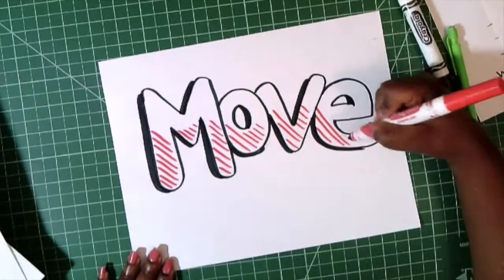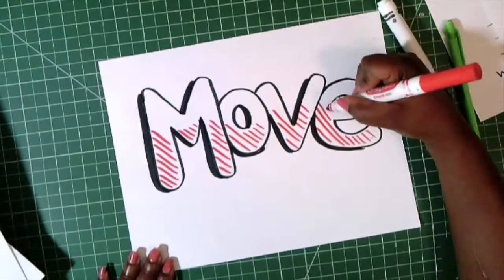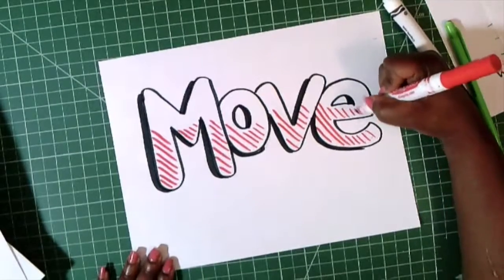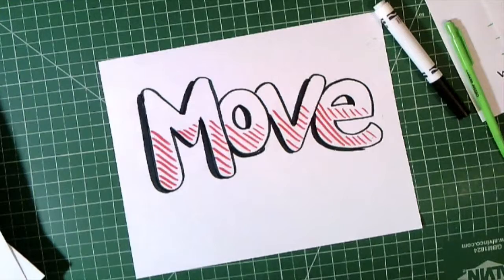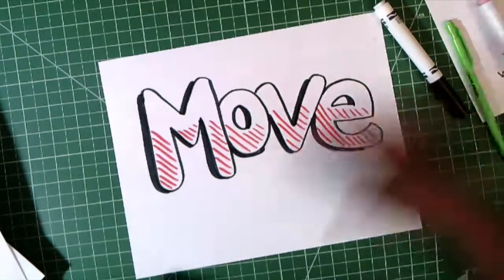And as I said before, this will work with any letter in the alphabet. So that's my word move, and block or bubble letters are basically letters that have shape. Bye!